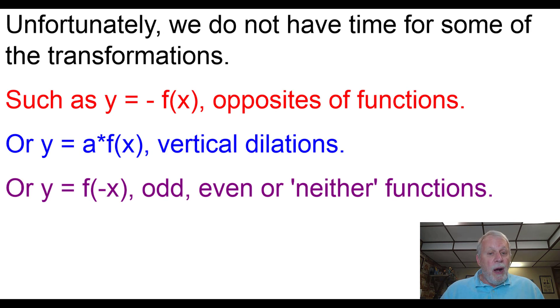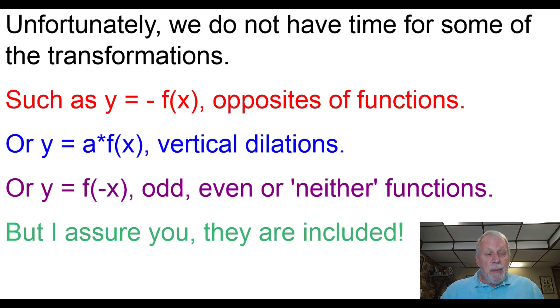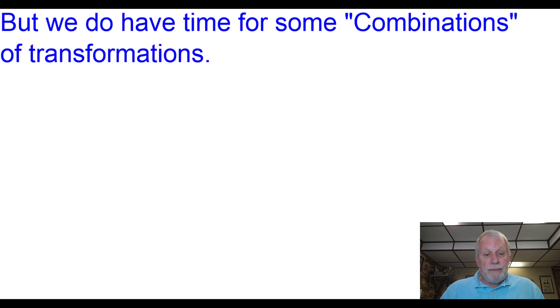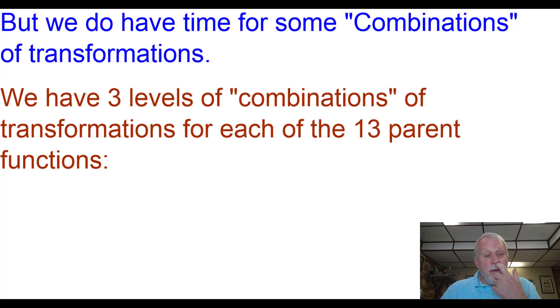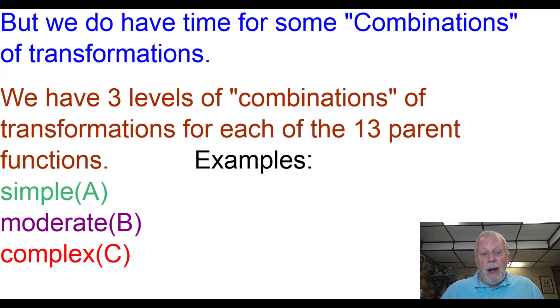Now, unfortunately, we don't have time for some of the transformations such as the opposites of functions, vertical dilations, odd, even, or neither functions. But I assure you they are included. We do have some times for what we call combinations of transformations. And we have three levels of combinations of transformations for each of the 13 parent functions. There's what we call a simple, which we designate by the letter A, moderate and complex. And here are examples of what we mean by simple. Those are two different transformations happening there. This one has three with the opposite sign. And this one has almost everything going on with it.